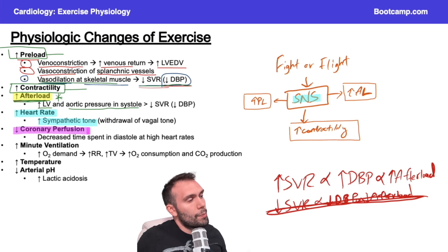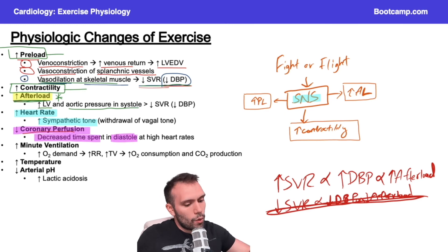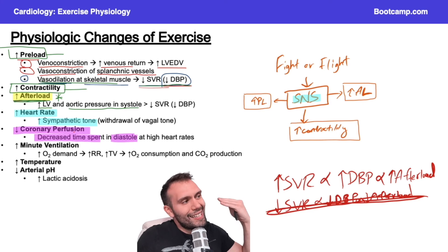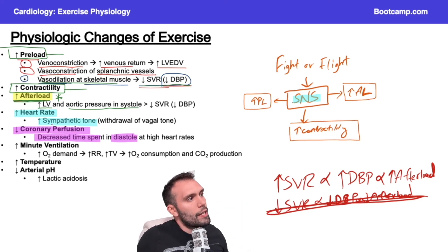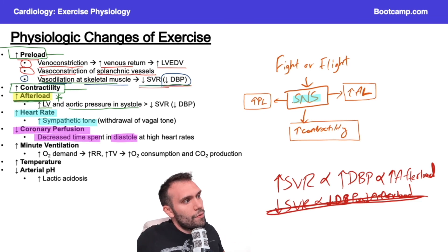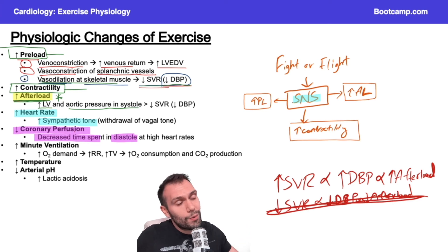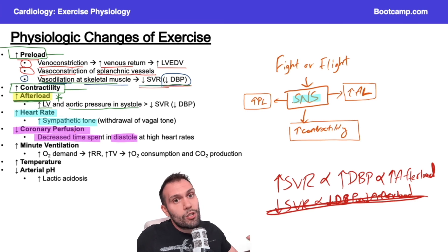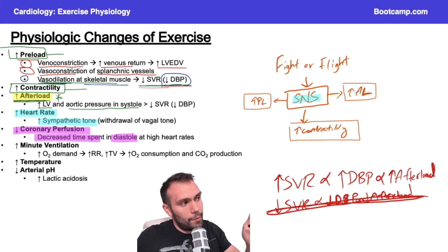Coronary perfusion primarily occurs in diastole. The concept is that the myocardium is already extracting a significant amount of oxygen. When I start to decrease the time spent in diastole due to increased heart rate, the only way to compensate is through vasodilation. If somebody has coronary artery disease or atherosclerosis, they might already be maximally dilated. That's why those patients develop angina and chest pain when they exercise — they're developing ischemia because they're maximally dilated and now have decreased time for coronary perfusion.